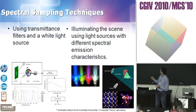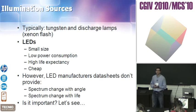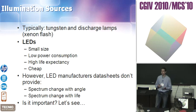So we have the two approaches: we use white light sources, or we can also use color light sources. Traditional light sources are tungsten or discharge lamps, like xenon lamps. And lately, the use of LEDs has started to be widespread.